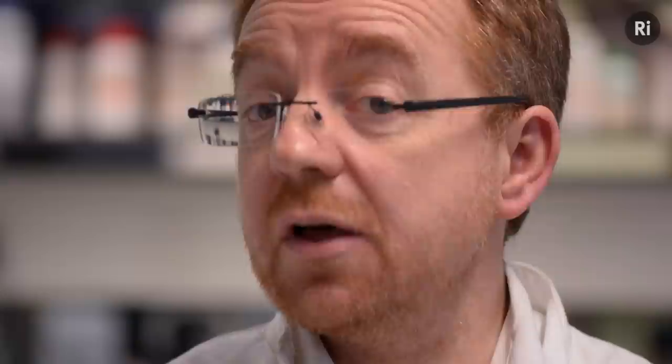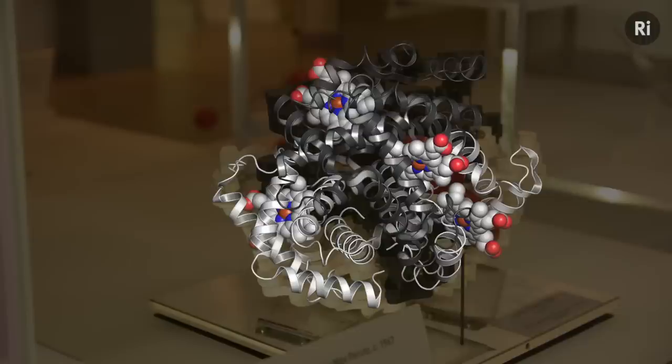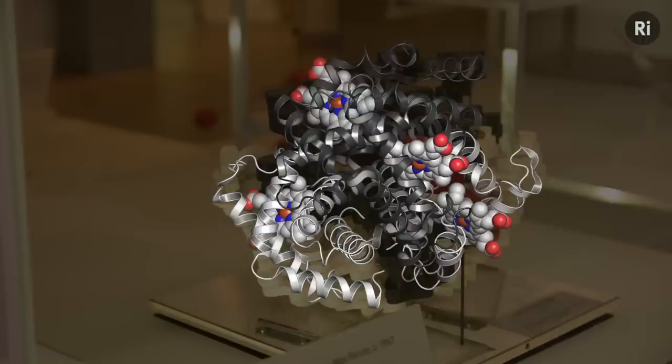if you take a glance to the right of Kendrew's model at the Science Museum, you'll see Max Perutz's structure of haemoglobin, which is made of four chains, each of which looks very like myoglobin.